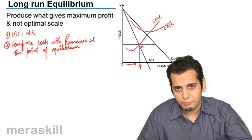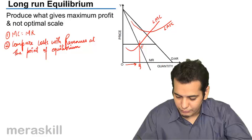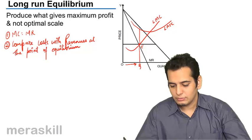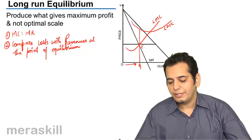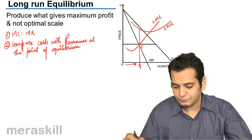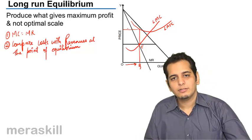From this point, that is the point of equilibrium, I have to compare the revenues and the cost. From the point of equilibrium, I move up and reach till the long run average total cost curve. This gives me my cost.